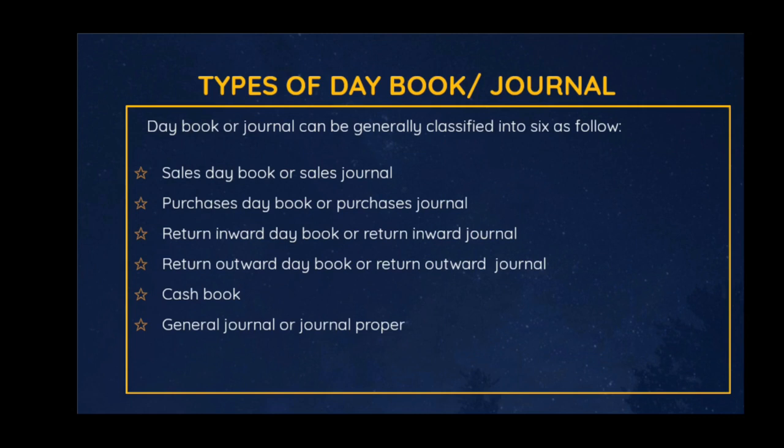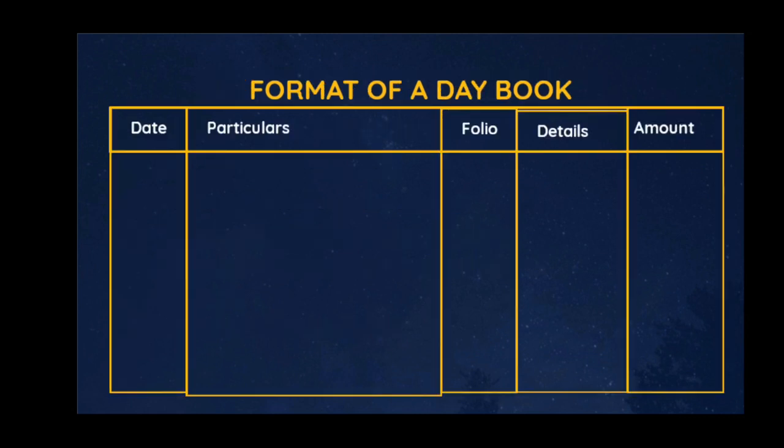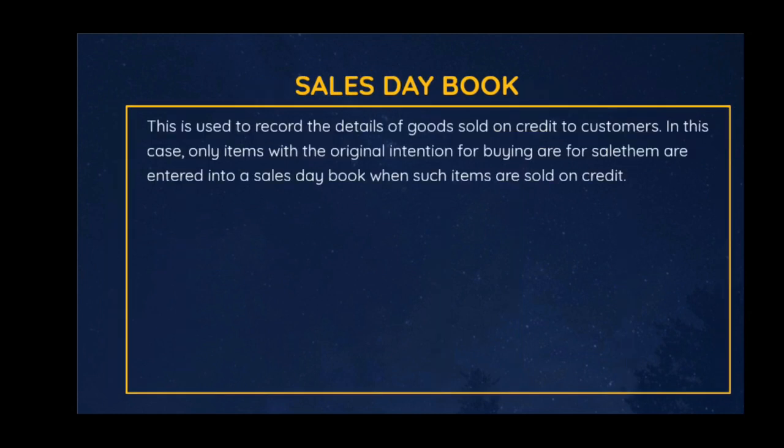So let's look at the format of a day book. We have the date column, we have the particulars column where the items that have been purchased are recorded, we have the folio column, we have the details column where the amount of each item is entered, and we have the amount column on the last side where the total of the items bought by a customer is recorded.